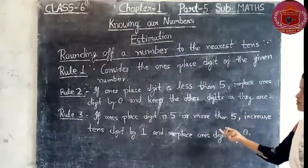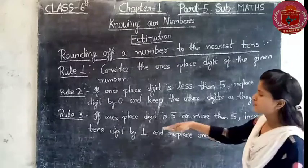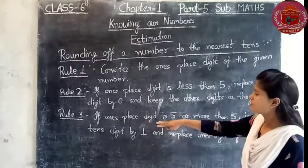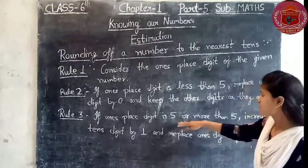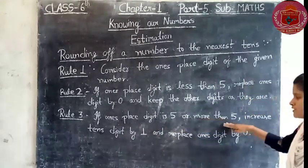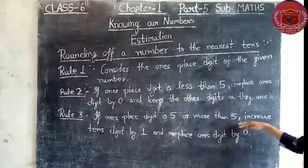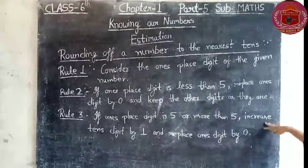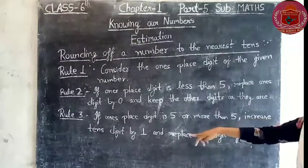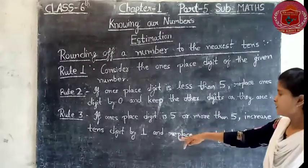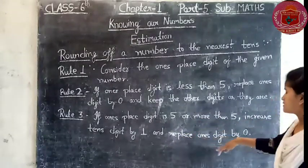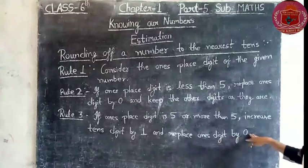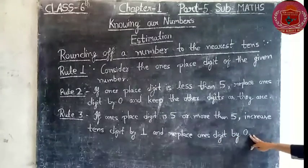Now rule number 3 is: if the ones digit is 5 or more than 5, then increase the tens digit by 1 and replace the ones digit by 0.